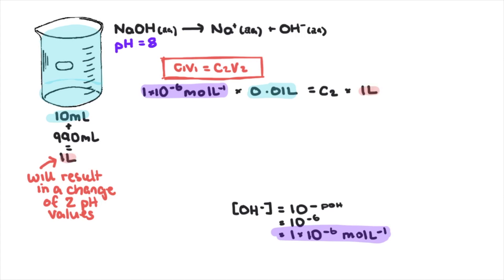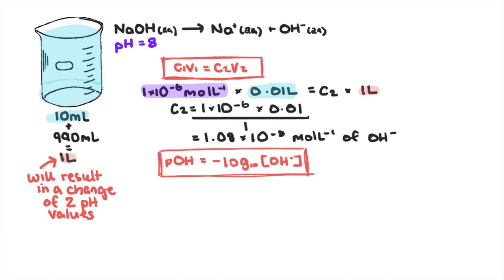We'll convert this hydroxide ion concentration into pOH using pOH equals the negative log of hydroxide ions. This gives us 8. And we know that pH plus pOH equals 14, so pH equals 6.